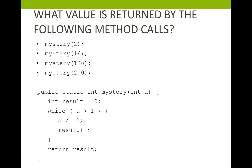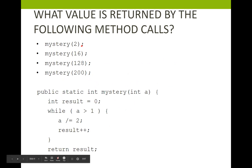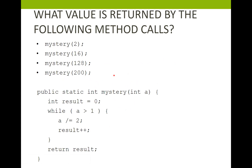Pop quiz: what is returned by the following method calls using this code? Think about what mystery(2), mystery(16), mystery(128), and mystery(200) would return. Pause the video, take a minute to figure it out, and then we'll review it before we end.